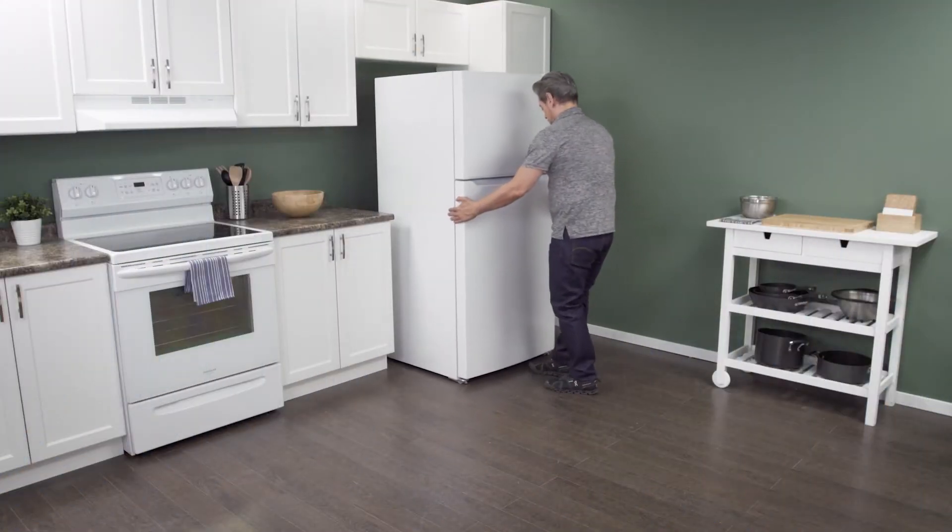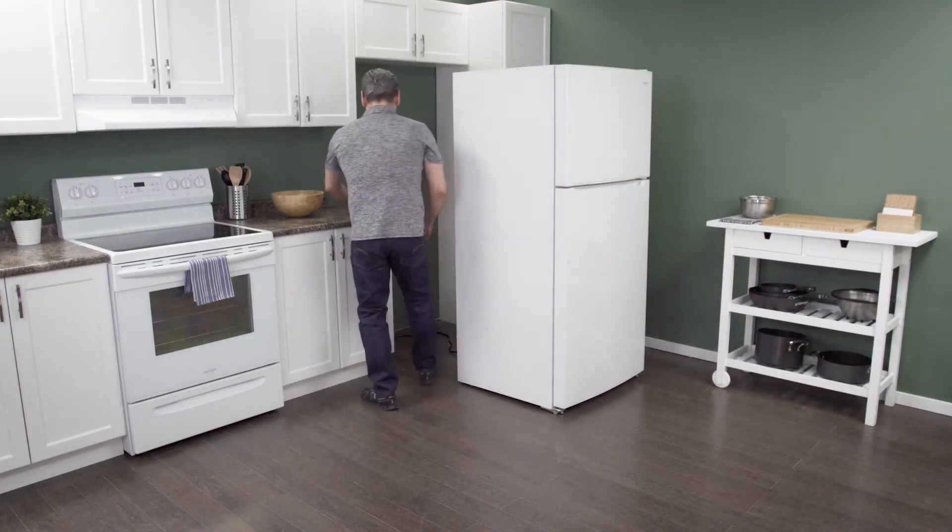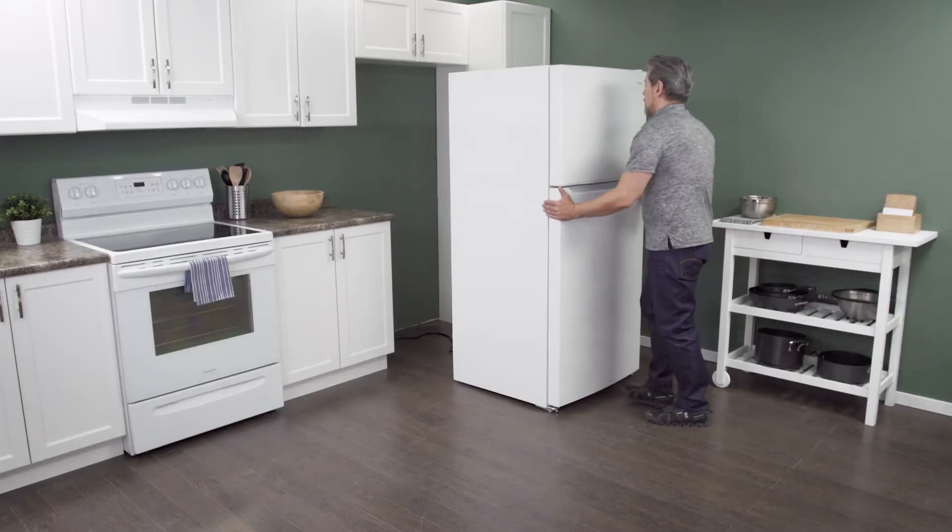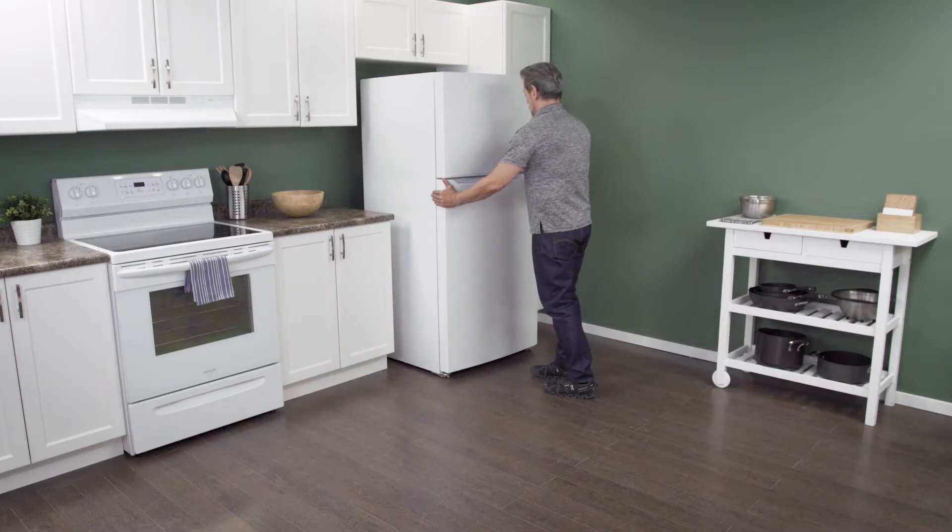First, slide the refrigerator out from the wall. When there is enough room, unplug the cord to disconnect the power. In this case, you can work on the refrigerator in place with it still against the wall.